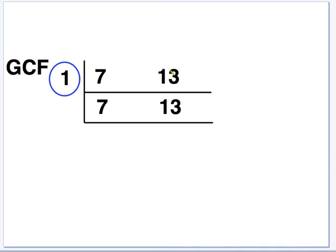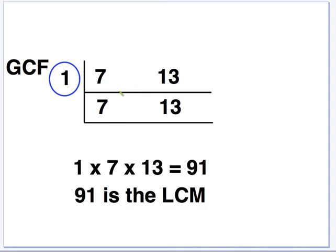I still carry out the division. I do 7 divided by 1 is 7. 13 divided by 1 is 13. So when I want to find my lowest common multiple, I still do the process of 1 times 7 times 13. And that gives me 91. And that's my LCM. Works every time. Thanks a lot, Nathan. Take care, guys.